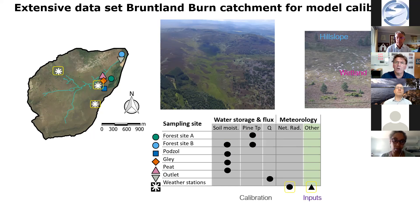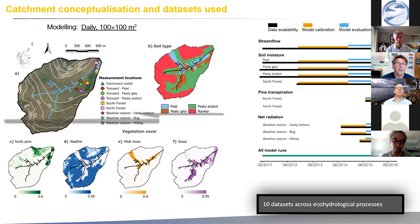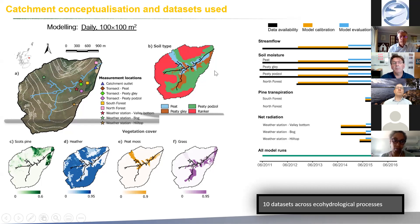It's a quite data-rich catchment that we've been operating for a long time. We've been operating on a 100 by 100 metre grid for the three square kilometre catchment — not incredibly fine resolution, but not too bad. We've parameterized the catchment according to soil type, which maps onto vegetation: heather on the steep hillslopes, sphagnum peat in the valley bottoms, and some Scots pine in some areas. With the data we've got, we've been able to calibrate the model using streamflow data, soil moisture data, transpiration data, and net radiation, with sufficient data for both model calibration and evaluation.